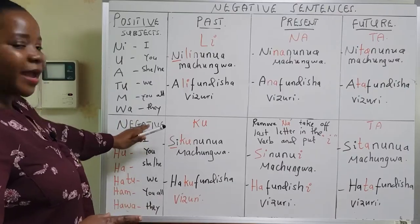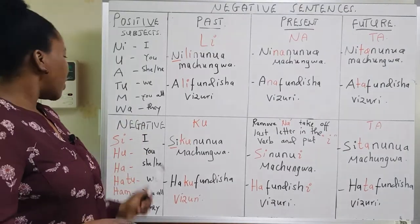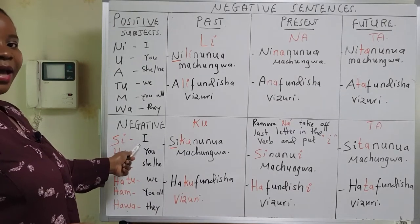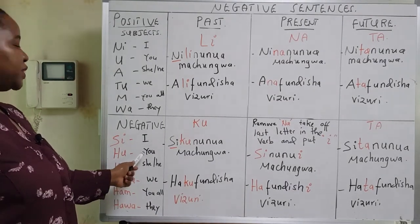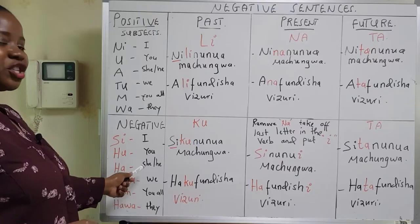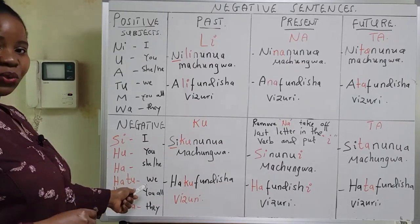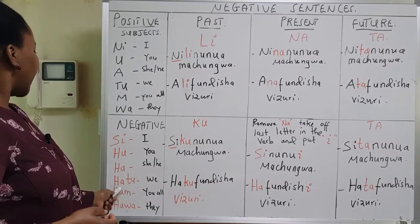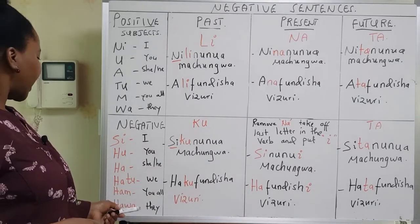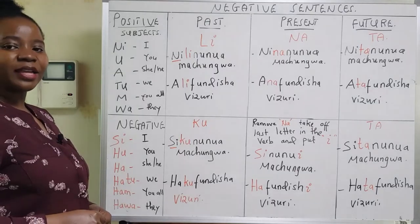For the negative subjects, which is our main topic today: si means I, hu means you, ha means she or he, hatu means we, ham means you all, and hawa means they.